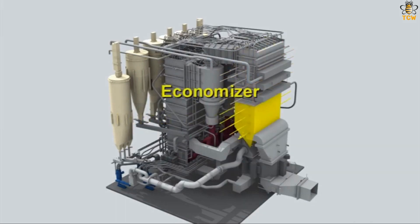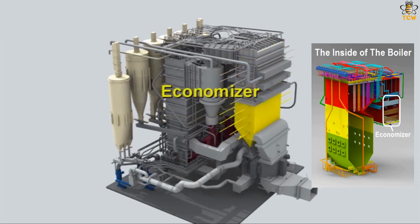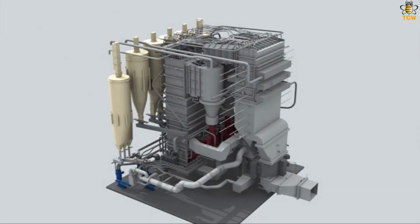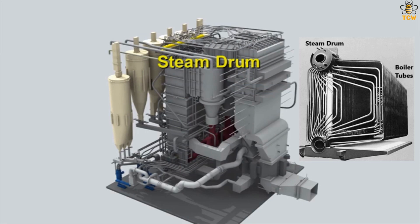Next is the economizer. The economizer is an arrangement of pipes at the end of the hot gas flow in the boiler that serves to heat the feed water entering the boiler. The steam drum is a temporary steam storage container in boilers. The steam drum serves to separate the phase of water carried by steam.